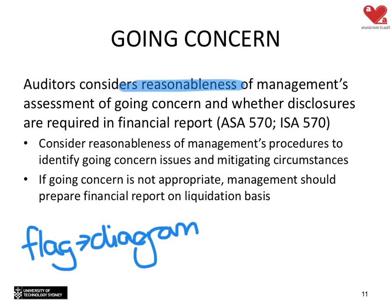If going concern is not appropriate, the financial report must be prepared on a liquidation or salvage value basis — what would you get if you sold everything today? That can be very difficult to audit, especially for custom-built items. For example, lecture theatre chairs would be very hard to sell — there aren't many buyers. Sometimes auditing on liquidation values is really tricky.